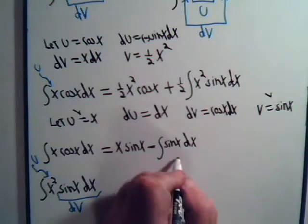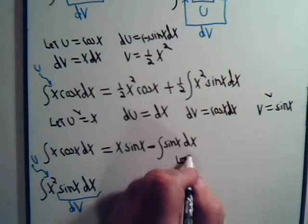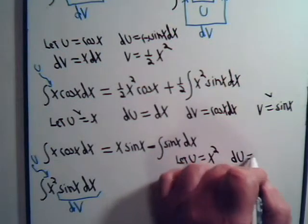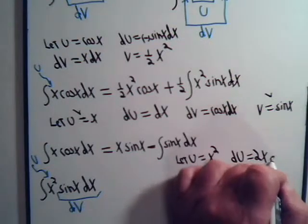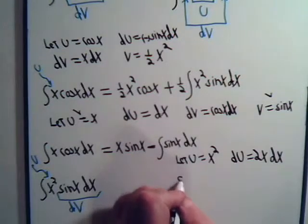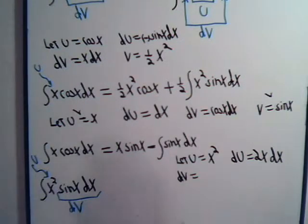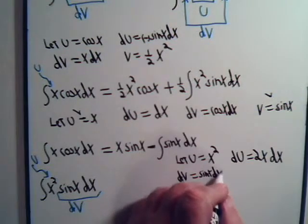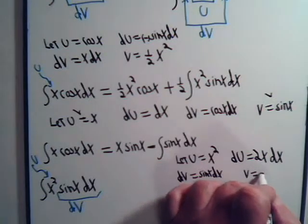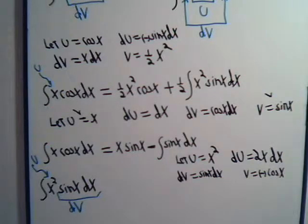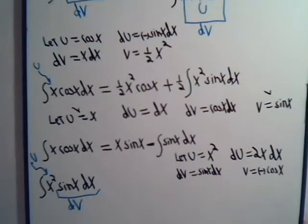So, let u equal x squared. du will equal 2x dx. Now, we're saying dV is the sine of x dx. So, v is minus cosine of x. The integral of the sine of x is minus the cosine of x. So, now, we apply the formula.